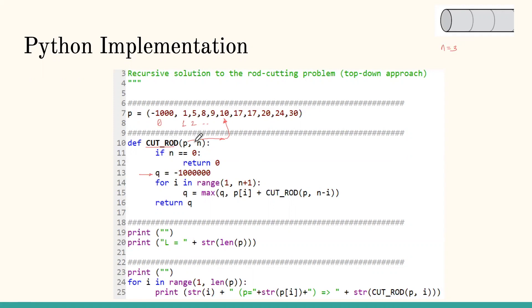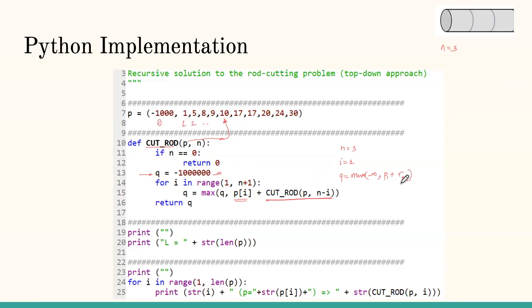When n equals three, we call rod-cut. Since n is not zero, we start i from one. We try to calculate Q = max(−∞, P_1 + rod-cut(n=2)), meaning R_2. We are stuck until we calculate R_2, so we call rod-cut with n equals two. Inside that call, with i equals one, we need Q = max(−∞, P_1 + R_1), so once again we call rod-cut with n equals one.